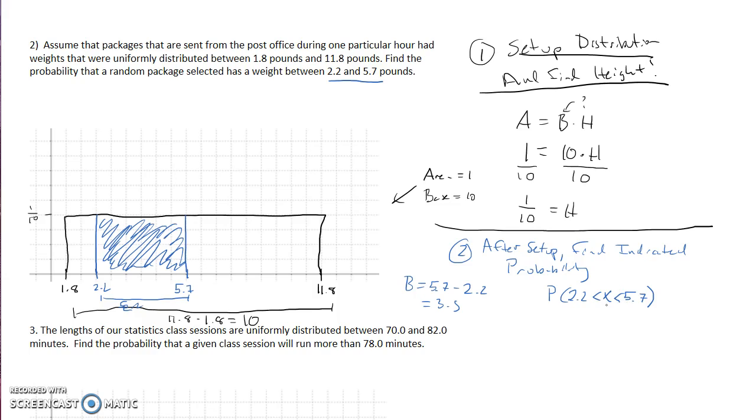And then with these compound inequalities we have the x's or the inequalities both opening to the right, because if you read this, this says x is greater than 2.2 and x is less than 5.7.